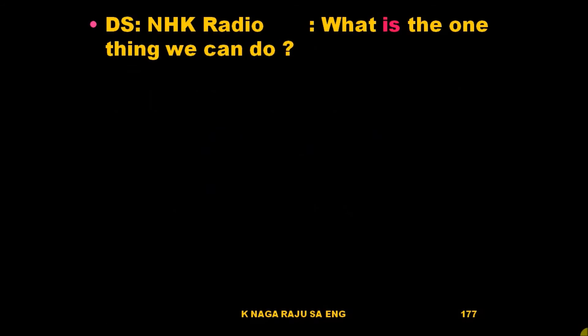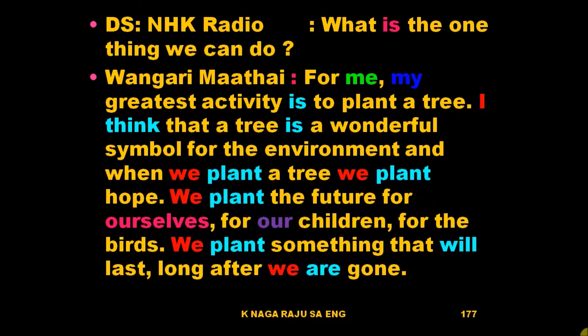Direct speech continues. NHK asked: 'What is the one thing we can do?' Vangari Matai replied: 'For me, my greatest activity is to plant a tree. I think that a tree is a wonderful symbol for the environment. And when we plant a tree, we plant hope. We plant the future for ourselves, for our children, for the birds. We plant something that will last long after we are gone.'